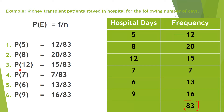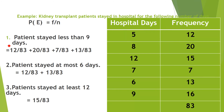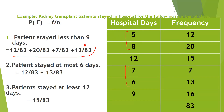Similarly, 15 patients stayed 12 days, so probability is 15 over 83, and 16 over 83 for 16 days. Now a modification: if asked for the probability a patient stayed less than 9 days, you consider all groups below 9 days and add: 12/83 + 20/83 + 7/83 + 13/83.